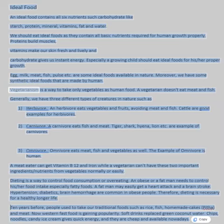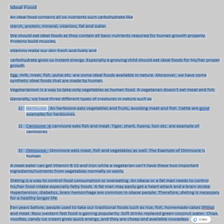Vegetarianism is a way to take only vegetables as human food; a vegetarian doesn't eat meat and fish. Generally, we have three different types of creatures in nature. One: herbivore — an herbivore eats vegetables and fruits, avoiding meat and fish.